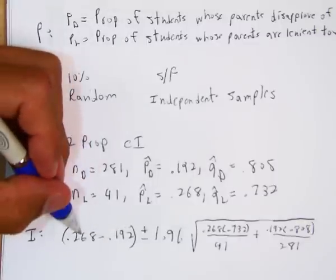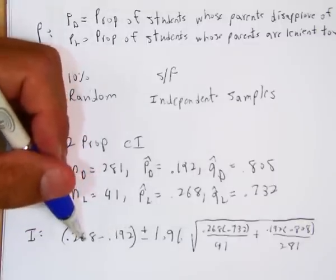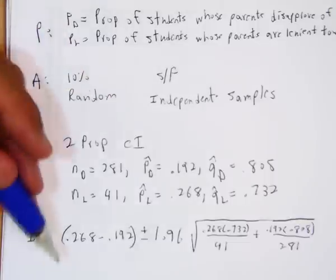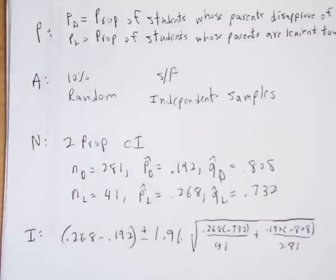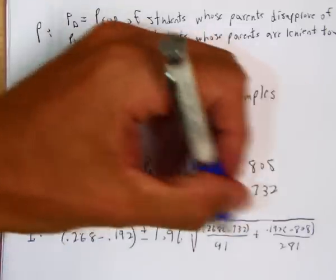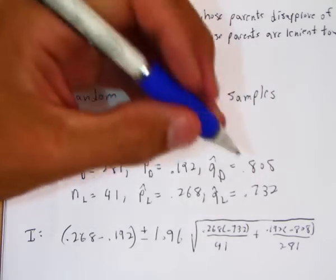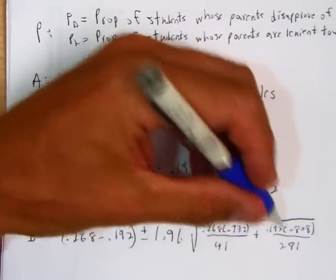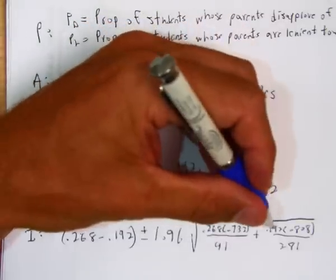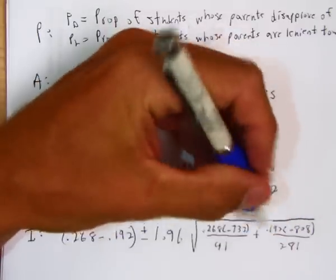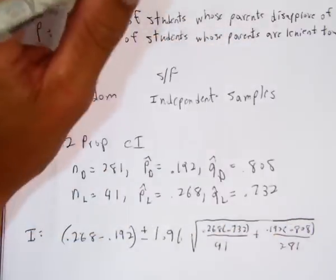Now, you could have done this the other way. You could have put the .192 first. You'd be comparing parents that disapprove to the parents that are lenient. I did it the other way because I like to use the larger number first. You could have put these opposite. That's fine. When you add, it doesn't matter what order you add in. You just can't mix these percentages with each other. So you can't put this .268 where the .192 is. You could do this fraction first plus this fraction second. That would be fine.